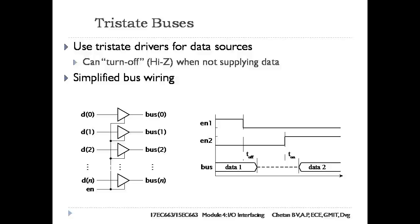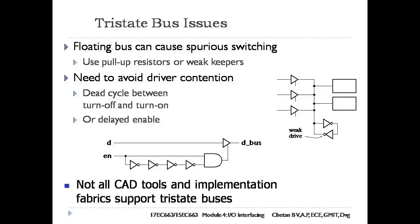There are some important issues to consider with tri-state buses. The first is wire delay: as wires connect all sources and destinations, they are generally long and heavily loaded with the capacitance of the drivers and inputs. The second issue is difficulty in designing the control section that selects among data sources. The control section must ensure that one source's drivers are disabled before any other source's drivers are enabled, as shown in the figure.